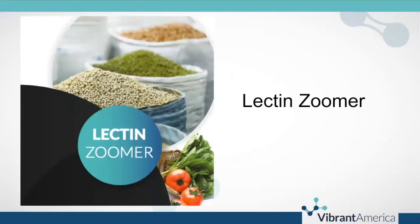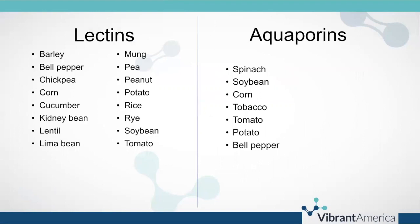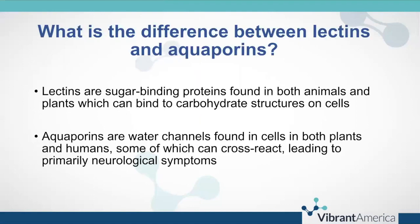Let's jump into the lectin zoomer. This test includes a handful of lectins and a handful of aquaporins. Lectins are sugar-binding proteins found in both animals and plants which can bind to carbohydrate structures on cells. Aquaporins are water channels found on cell membranes in both plants and animals, some of which can cross-react — meaning the aquaporin in a plant might cross-react with the aquaporin in a human — leading to primarily neurological symptoms in human populations.